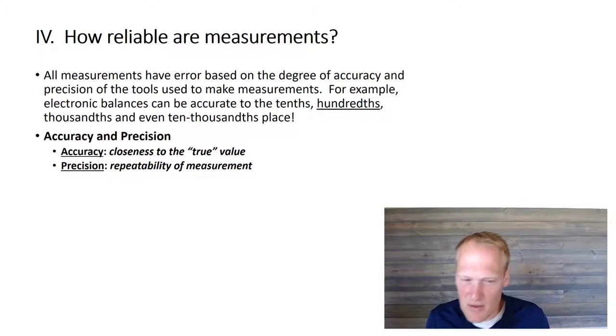So let's talk about the difference between those two words. Accuracy is how close you are to the true value, where precision is how often you can do it over and over again. So you can have one measurement that is accurate, but you need multiple measurements to show precision because it's doing the same thing over and over and over again.